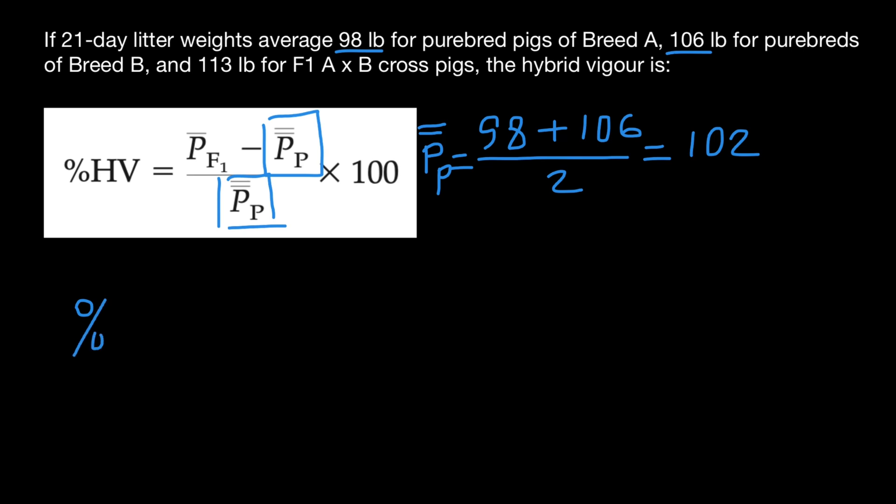So again, we calculate percent of the hybrid vigor, which is going to be average performance of F1 generation, which is 113 pounds minus average performance of the parental generation, which is 102 pounds, divided by average performance of the parental generation times 100.